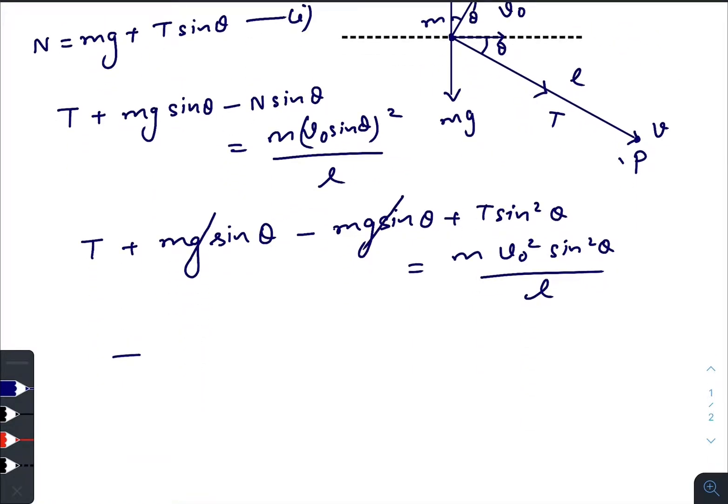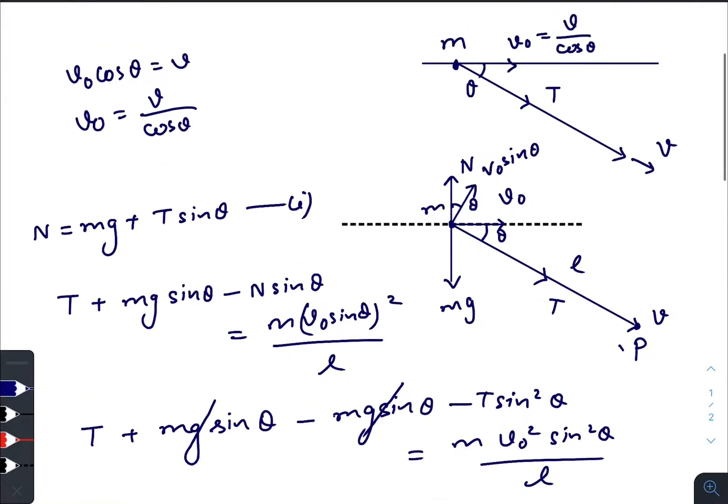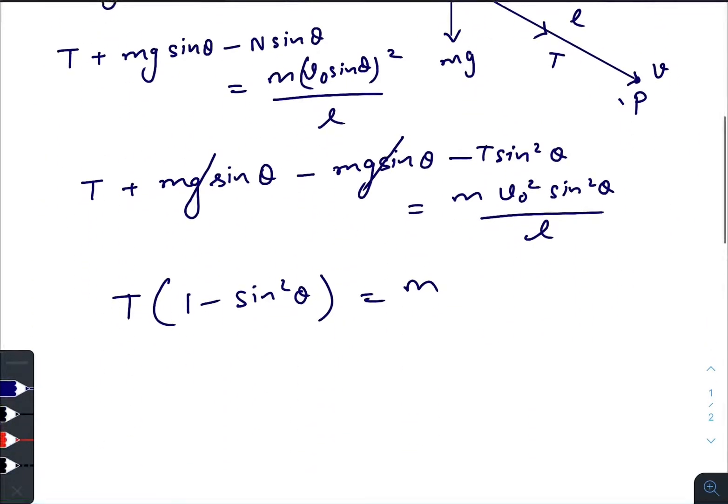Let us cancel out. So T times, sorry here it will be minus. One minus sine square theta equals M, V0 is equal to V divided by cos theta, so V square by cos square theta sine square theta divided by L.